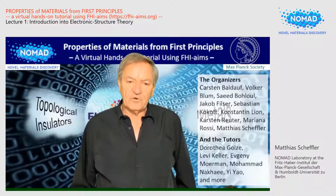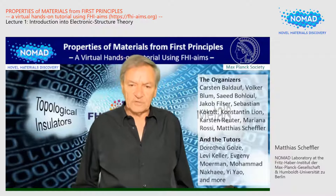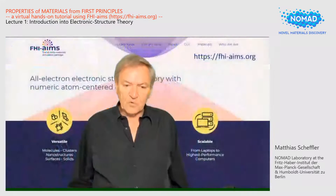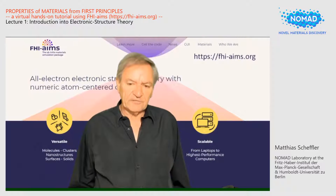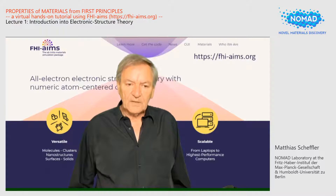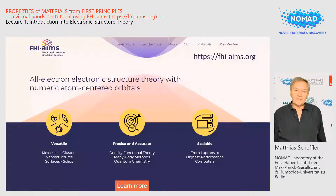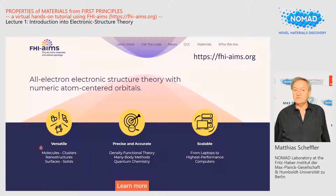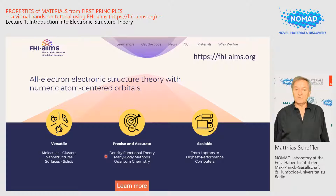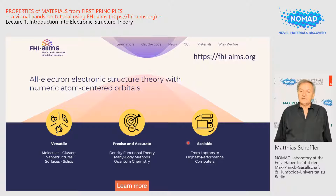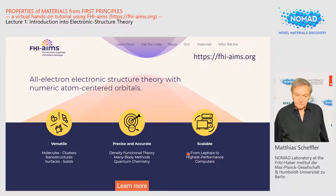The series is organized as a virtual hands-on tutorial using the computer code FHI-AIMS. This is the home page of FHI-AIMS at FHI-AIMS.org. This is highly accurate and efficient computer software evaluating the quantum mechanical electronic structure. The three yellow buttons tell us the code is versatile — it can handle molecules, clusters, nanostructures, surfaces and solids. It is also precise and accurate, dealing with density functional theory and very different exchange-correlation functionals, but also many-body methods and quantum chemistry. The code is scalable, meaning it runs on laptops but also on highest-performance computers. All these aspects will be covered in more depth during the next eight months.